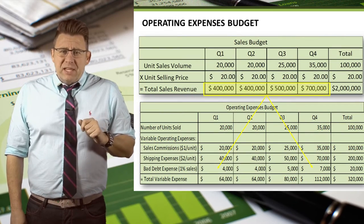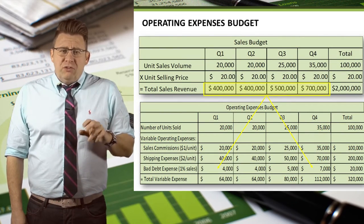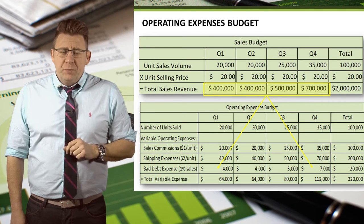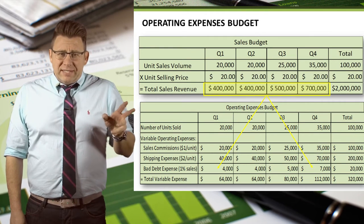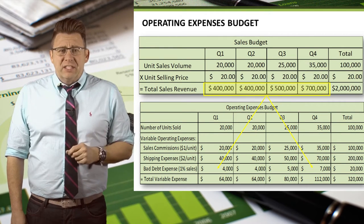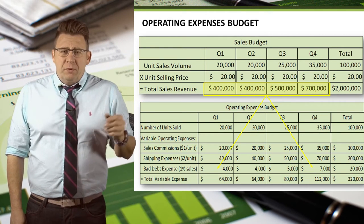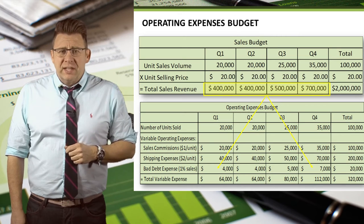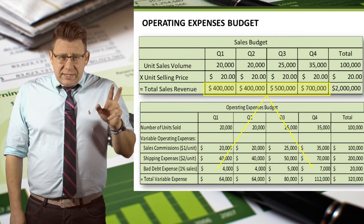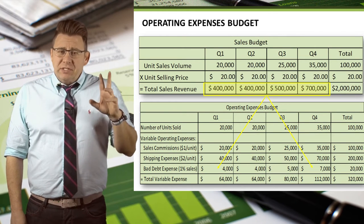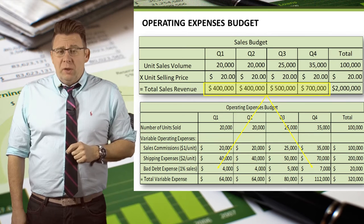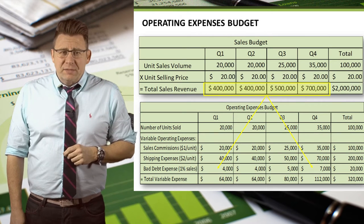Bad debt expense can be estimated using the percent of sales method. In my example, I assume that bad debt expense is one percent of total sales. So the rate times the sales revenue gives us the total amount of bad debt expense.